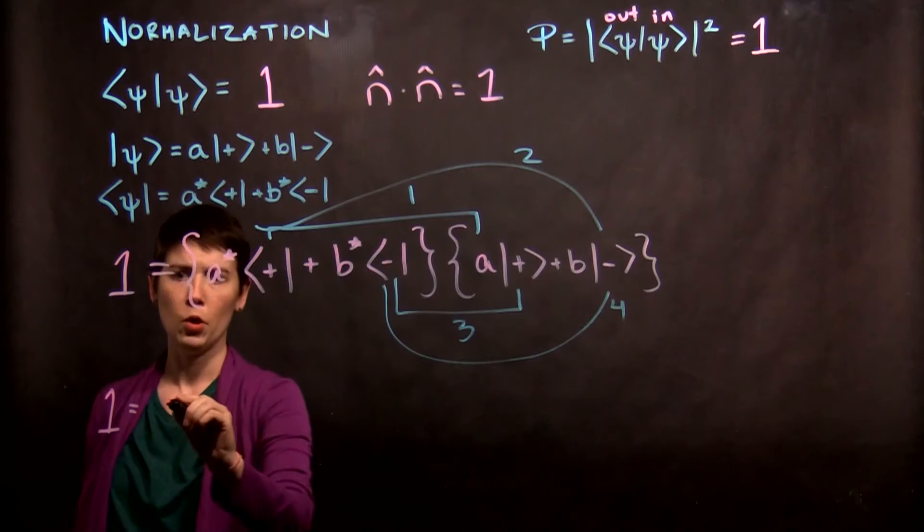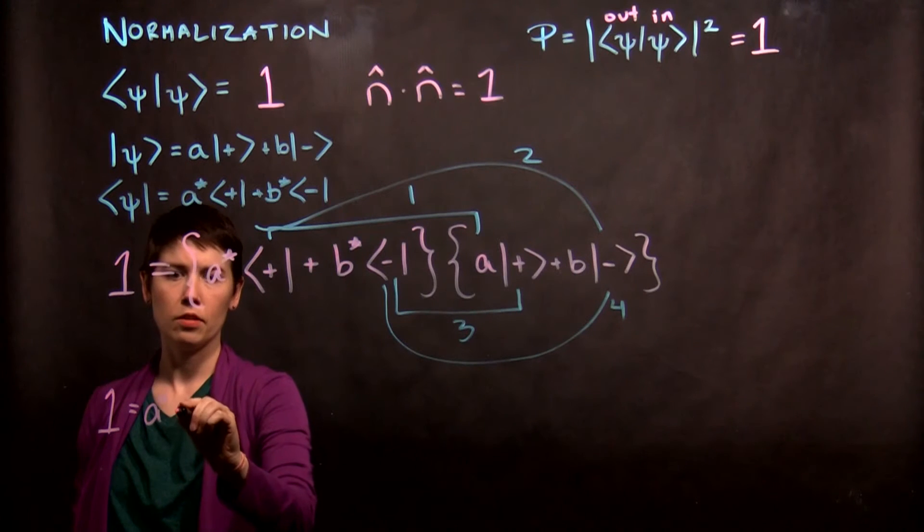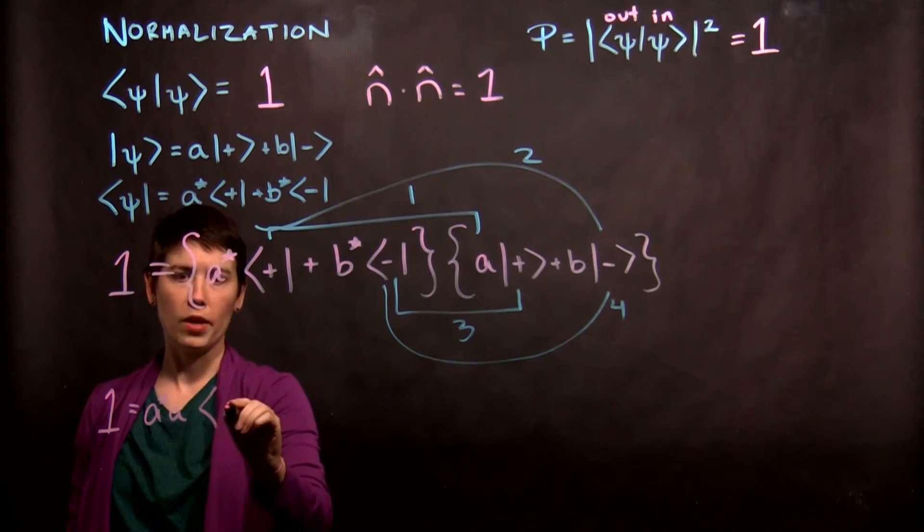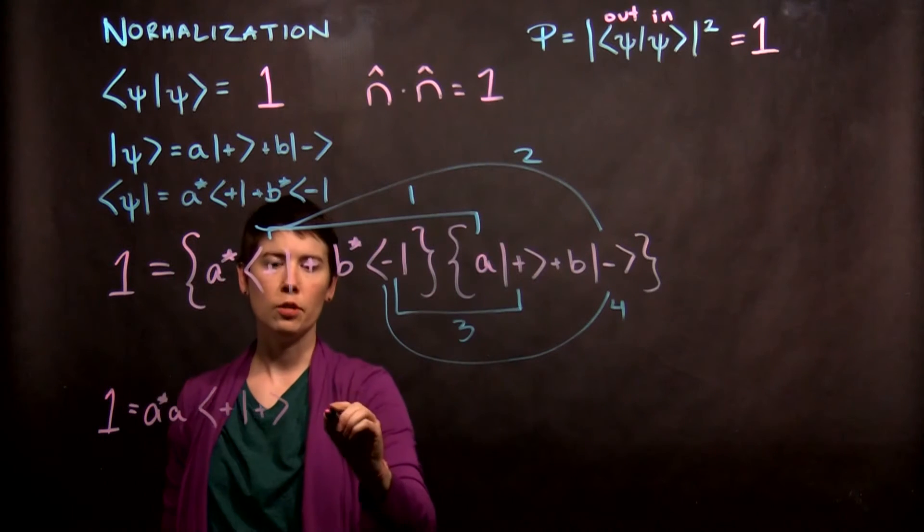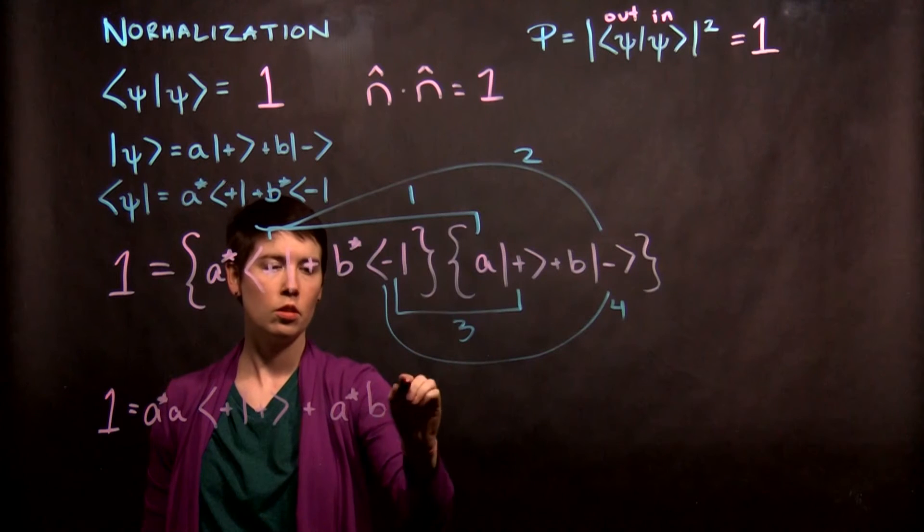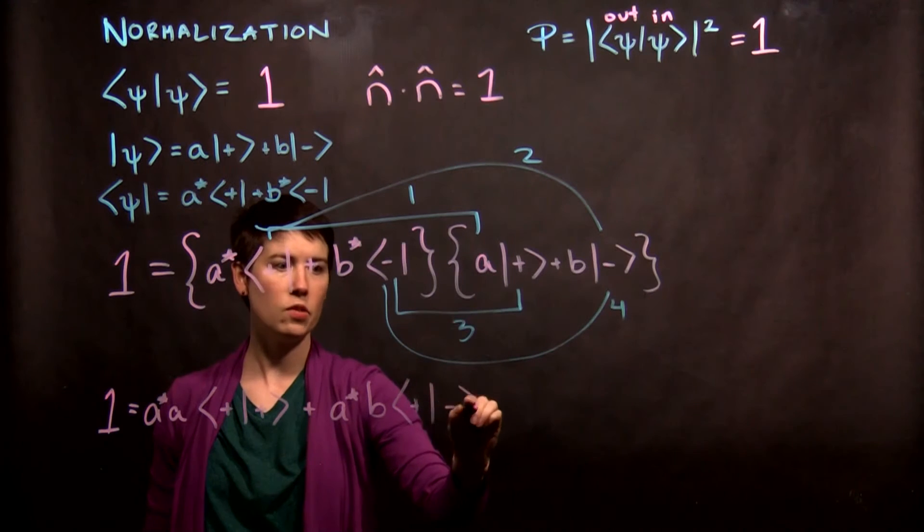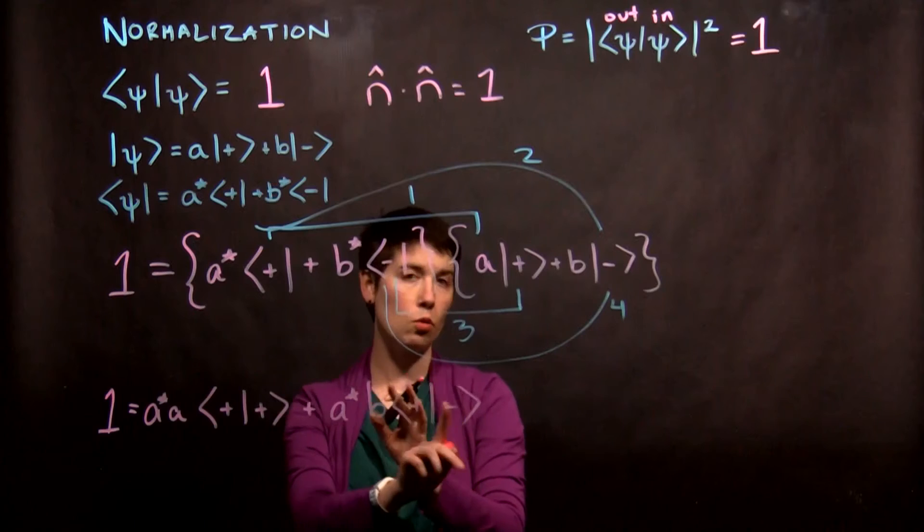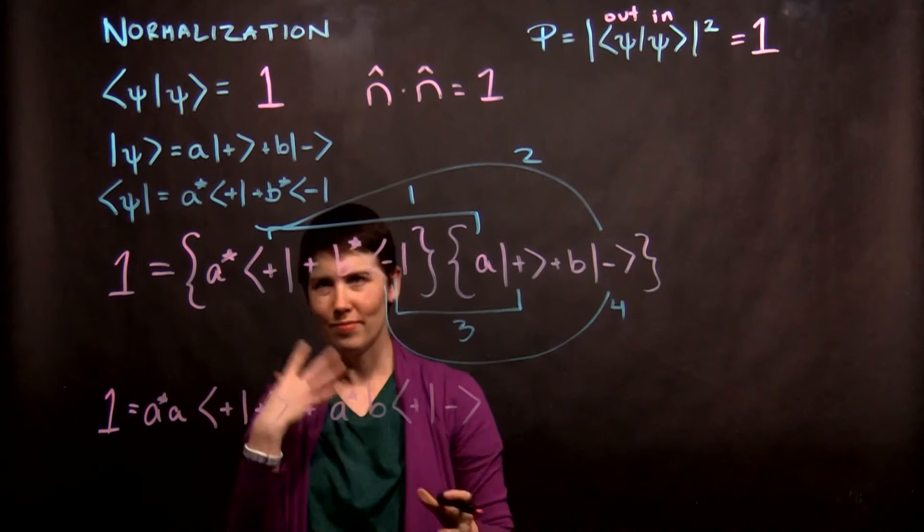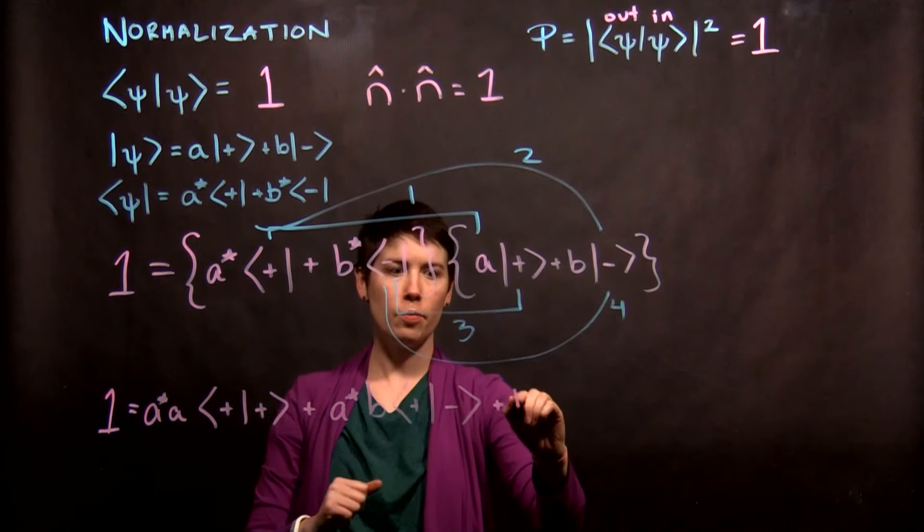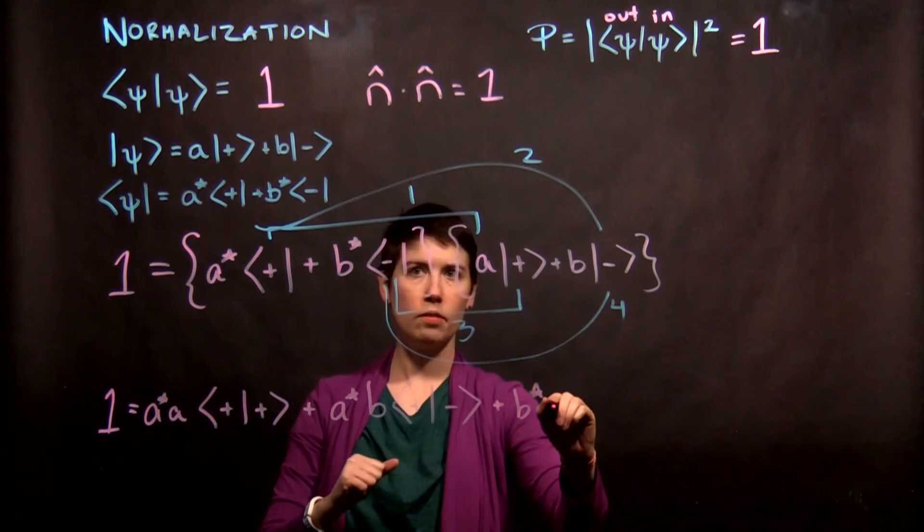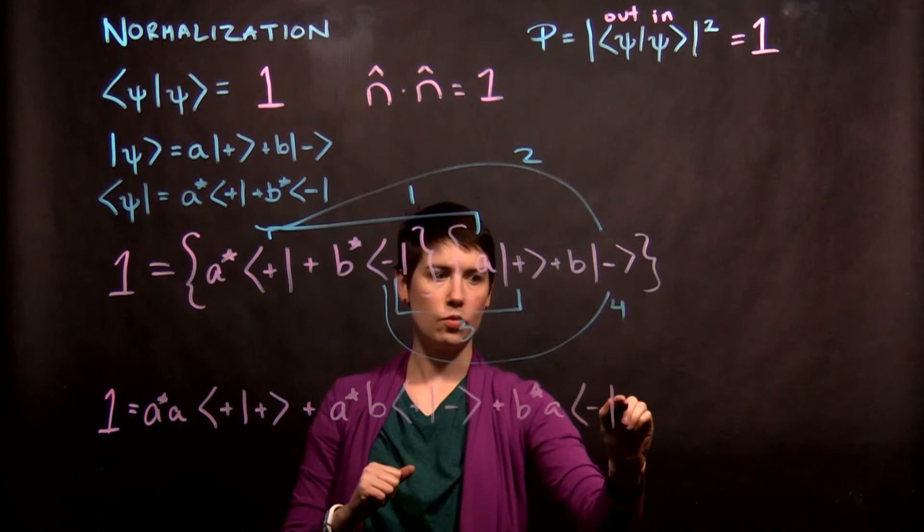So that first term, we get A star A, and then we have plus bracket plus. Second term is A star B plus with my minus, and make sure that you're not switching the orders of the bras and kets. Later, that might matter for things. And then my third term is B star A minus plus.